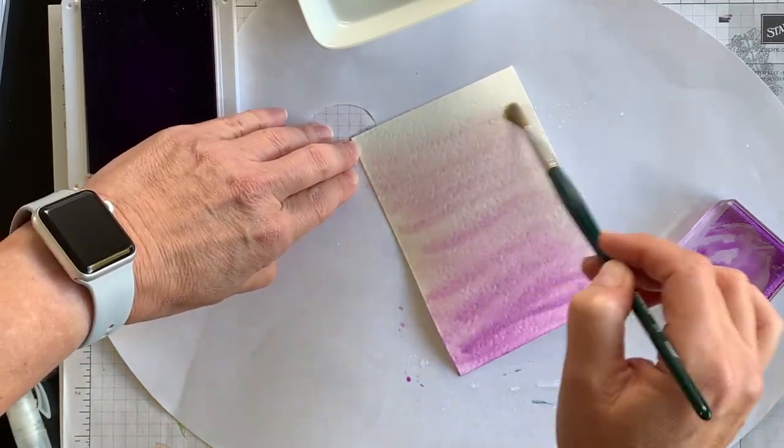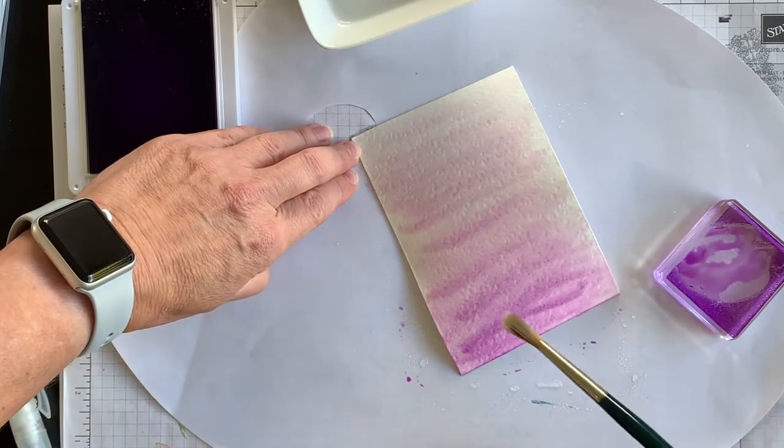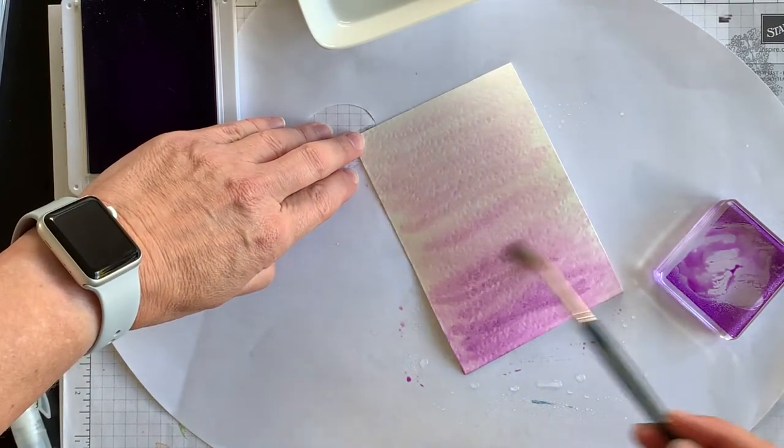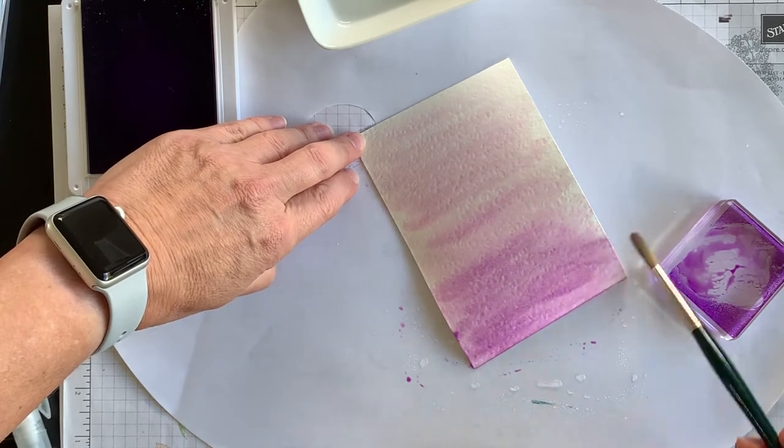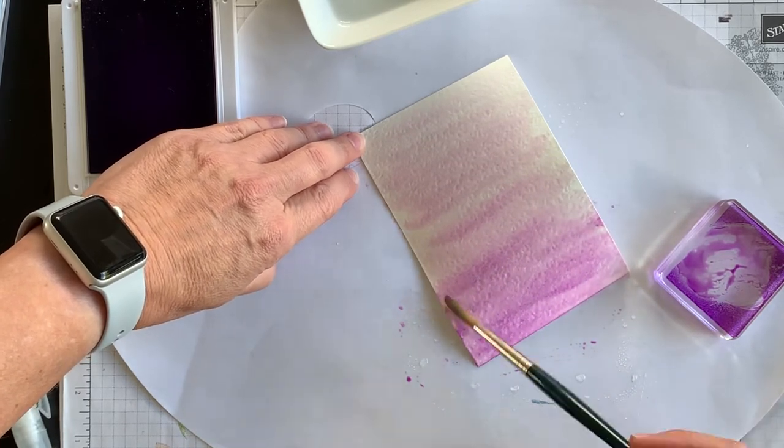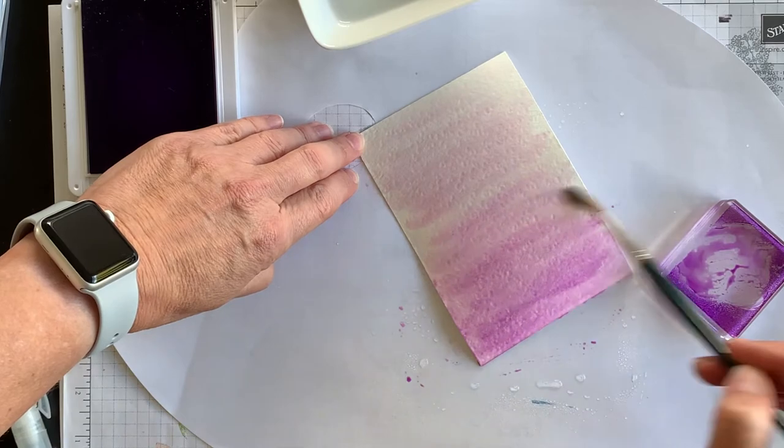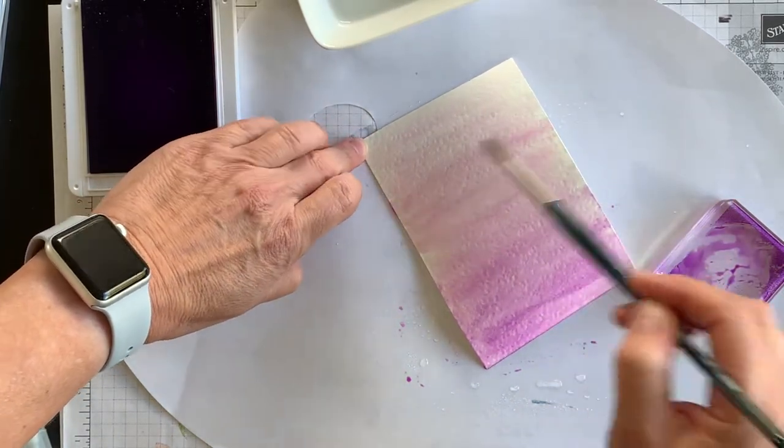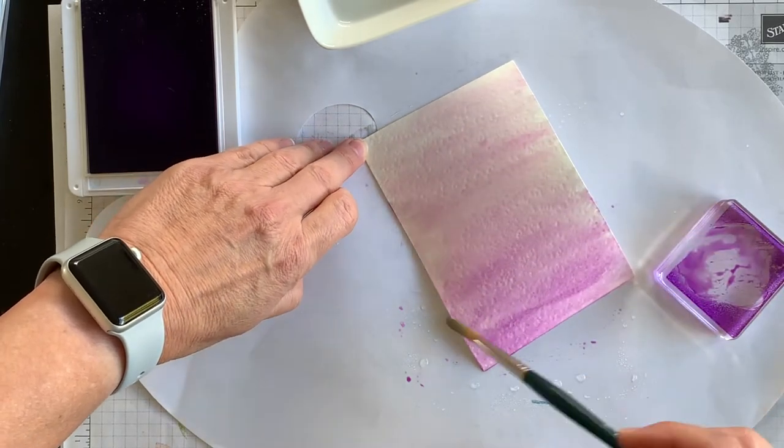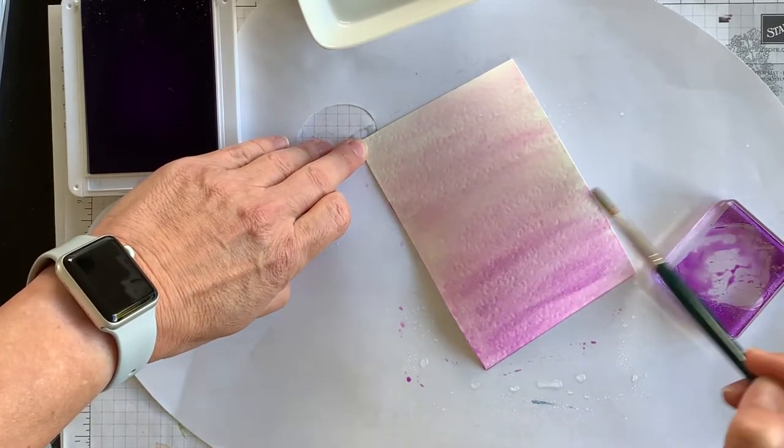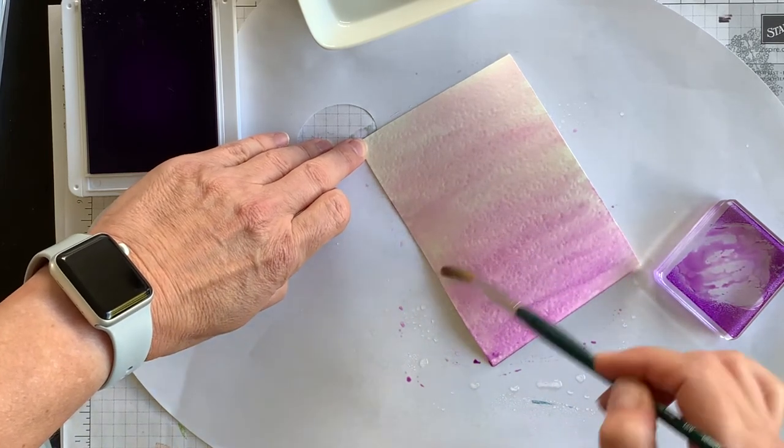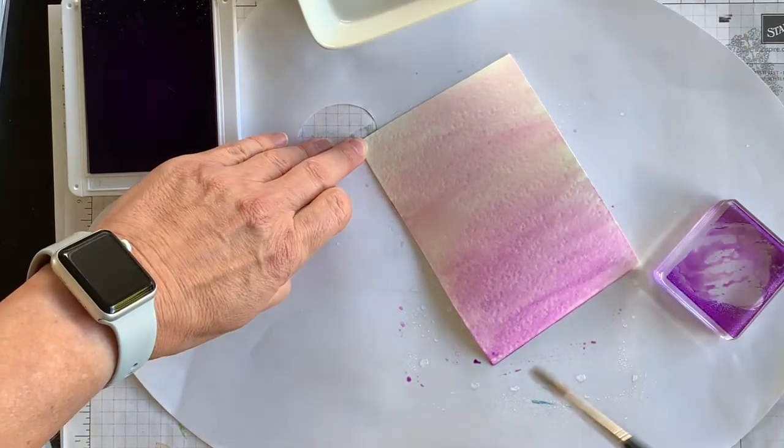Now if need be, if your watercolor paper is really absorbent and you want to add more water, you can do that. Have just a little bowl handy. Okay, and again, this is your personal preference. You can determine how dark you want it at the bottom and how light you want it at the top.